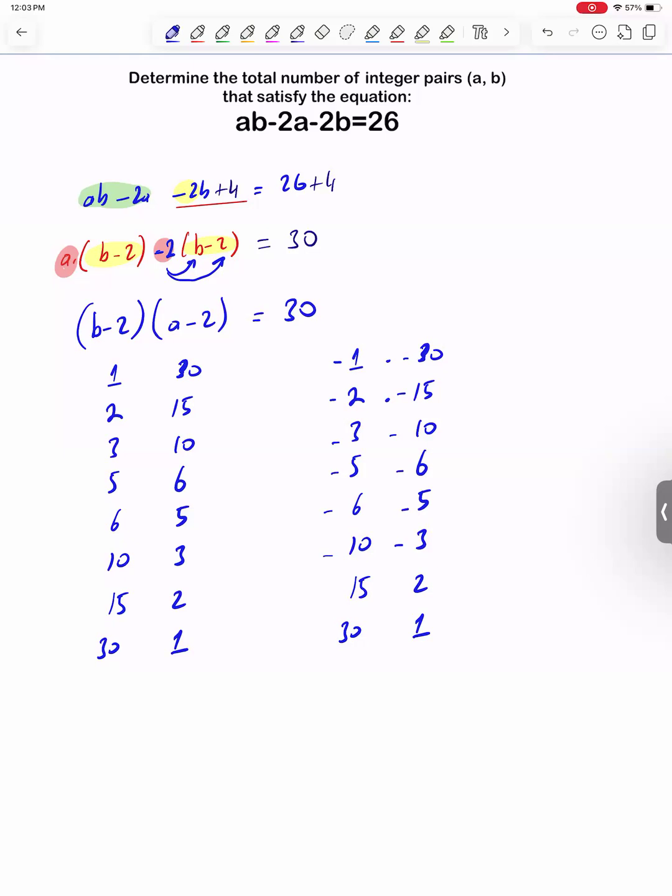For each case, we get a valid ordered pair. So, we have 8 ordered pairs here, and 8 here. 8 plus 8 is 16, the total number of integer pairs that satisfy the equation.